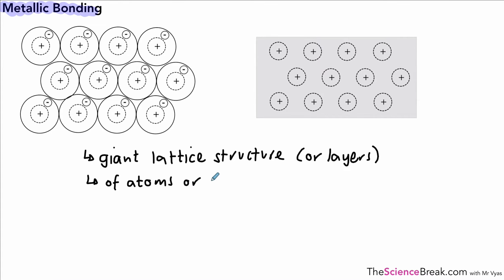We could say they are in layers of atoms, so giant lattice structure, layers of atoms. We could also say that there are delocalized electrons. We sometimes, or a couple of times so far, we've mentioned that as a sea of electrons, which is okay.